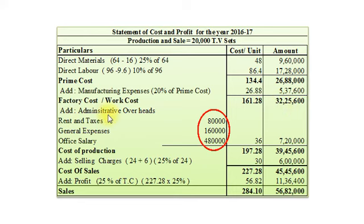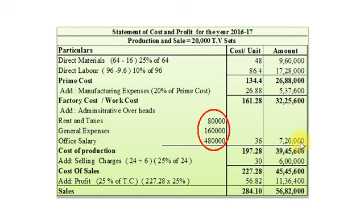Now we will add administrative overheads. As per additional information number 5, other expenses will remain unaffected — meaning they remain constant. When any expense remains constant, we take the total amount, not per unit. So we take Rent and Taxes Rs. 80,000, General Expenses Rs. 1,60,000, and Office Salary Rs. 4,80,000. Total amounts to Rs. 7,20,000 — the same as 2015-16. Per unit it will be Rs. 36. So our Cost of Production amounts to Rs. 197.28 per unit and Rs. 39,45,600.